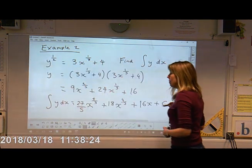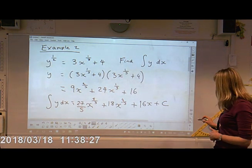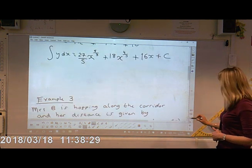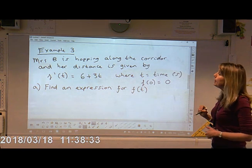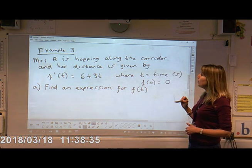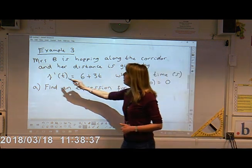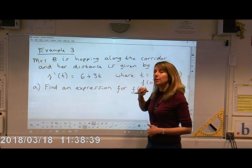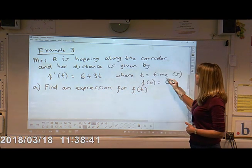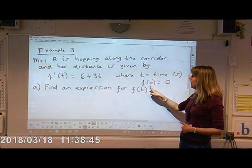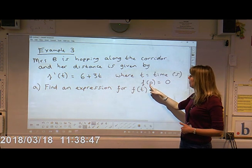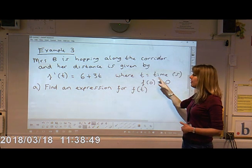Last example before I let you loose on mixed exercise chapter 13. Mrs. B is hopping along the corridor and her distance is given by the derivative of T equals six plus three T, where T is the time in seconds and look what this means. This means when T is zero, the function is zero. This is key.